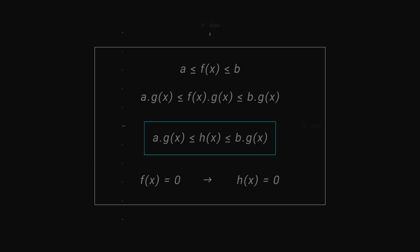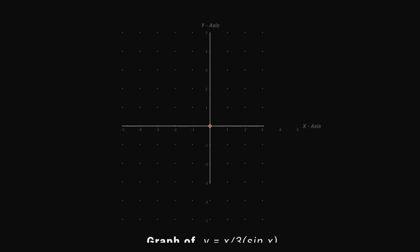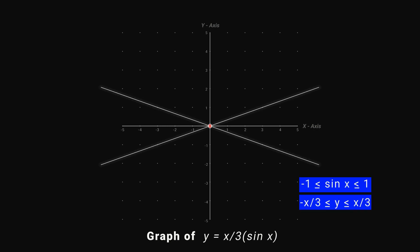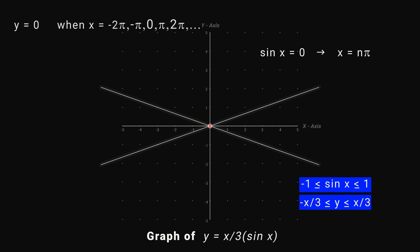Let's take some example. y equals (x/3)·sin x. Here sin x lies between minus 1 and 1, so y lies between minus x/3 and x/3. When sin x equals 0, we have x equal to nπ, where n belongs to the integers, so y equals 0. This occurs at x equal to minus 2π, minus π, 0, π, 2π, and so on.